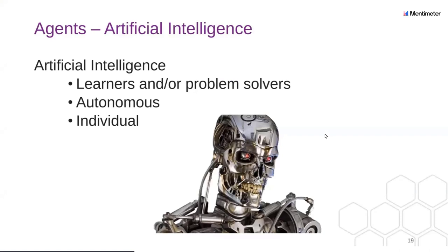So now we're on to agents. What is an agent? Quite often people associate agents with artificial intelligence. Artificial intelligence is about learners or problem solvers. They tend to be quite autonomous and they tend to be an individual. In this case, the Terminator — he's got a particular problem to solve: he has to kill John Connor. He learns how to do that and moves independently. Think about Terminators as artificial intelligence. Artificial intelligence is not always about trying to kill people. Not always.